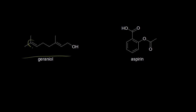Here is a carbon-carbon double bond. We know that a carbon-carbon double bond is an alkene. So here is an alkene functional group. And here's another alkene — another carbon-carbon double bond.